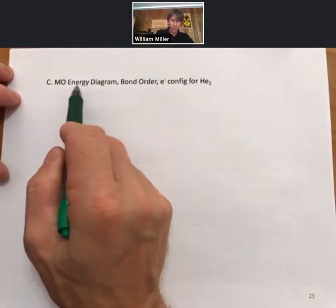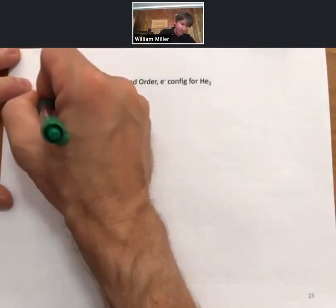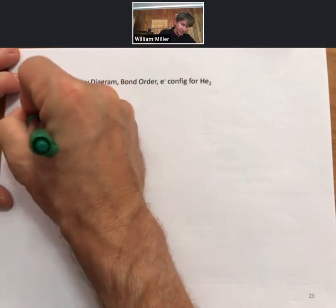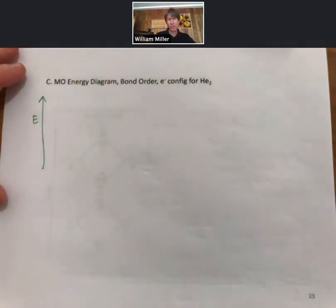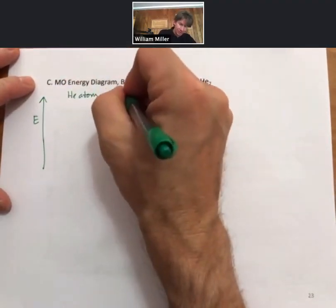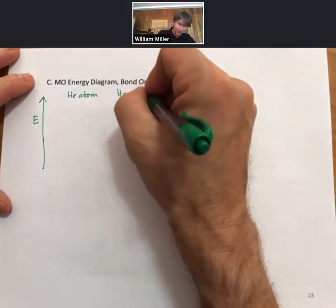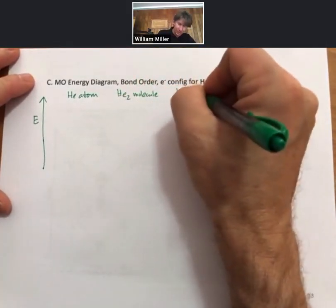In the previous video we did the molecular orbital energy diagram, bond order, and electron configuration for hydrogen H2. Now let's do it for helium. Our picture starts with our energy arrow. It starts with a helium atom, and we'll draw a helium-2 molecule in the middle and a helium atom on the other side.